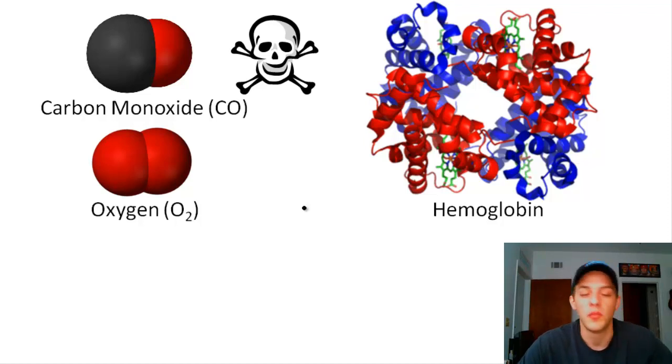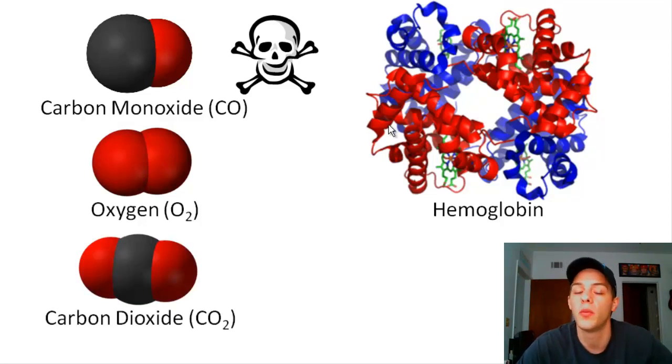So a molecule that's closely related to carbon monoxide called carbon dioxide, which is composed of a carbon atom and two oxygen atoms, is not nearly as toxic as carbon monoxide. And the reason why is because that extra oxygen atom severely limits the ability of the molecule to bind to hemoglobin. So just the one oxygen atom, just one atom, has a very profound effect upon the behavior of these substances.